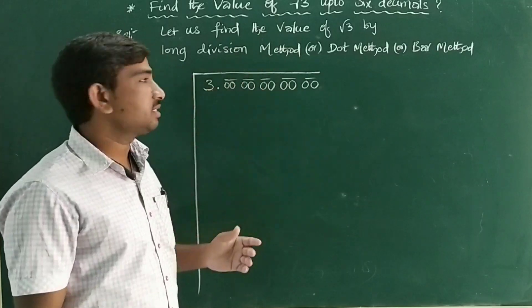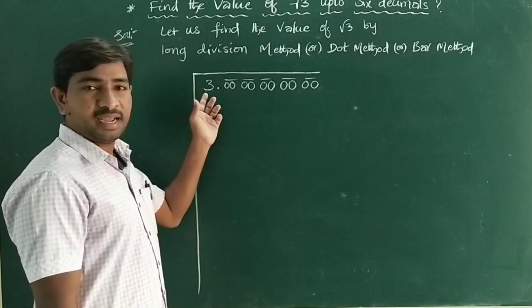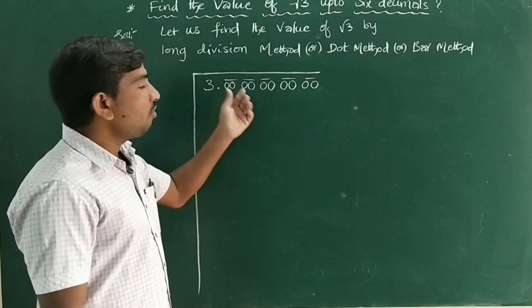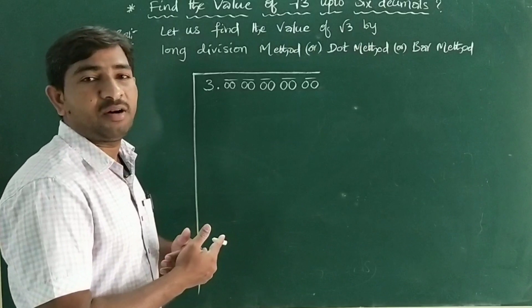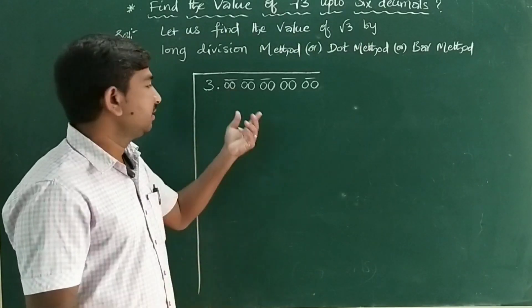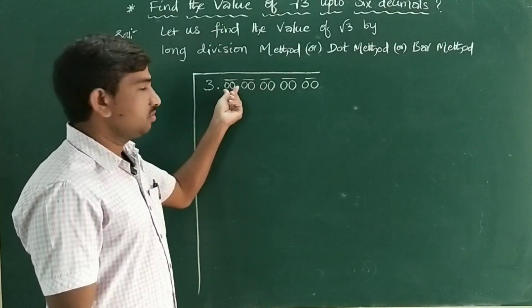First, we write 3, and afterwards put a point and keep adding zeros. How many decimal places we require, that many zeros we have to consider. So: 3.00 00 00 00.